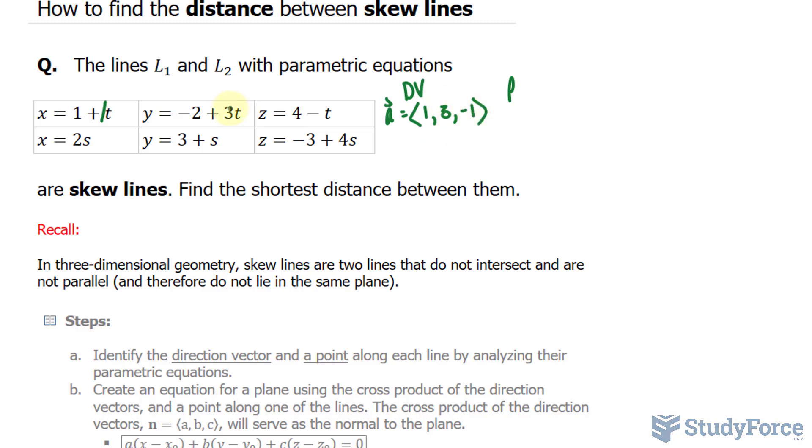Once again, I took 1, 3, and negative 1. The direction vector for this, we'll call it b, that is 2, 1, and 4. Remember before we continue that every line in 3D space is defined by a point plus a scalar quantity times a direction vector. The direction vector is parallel to the direction of the line.